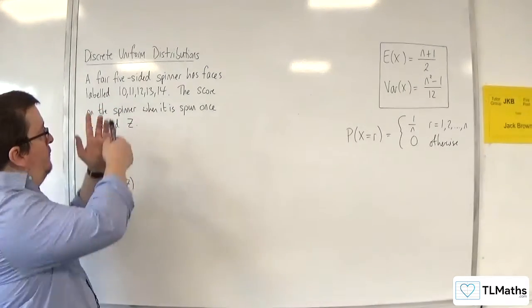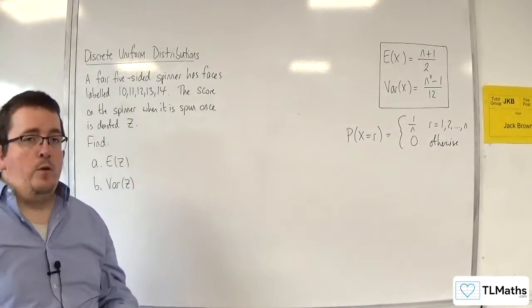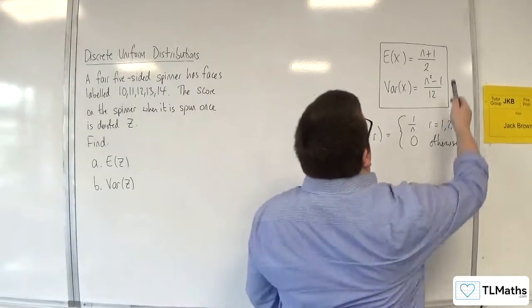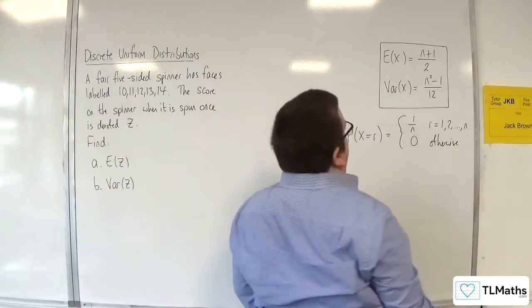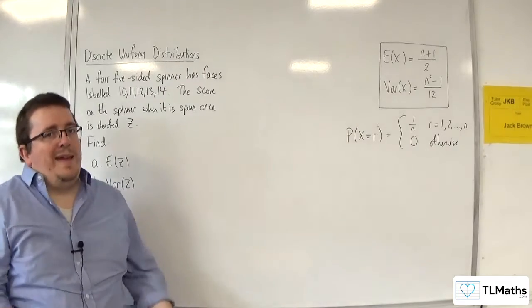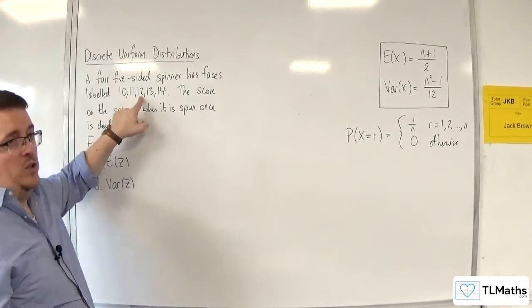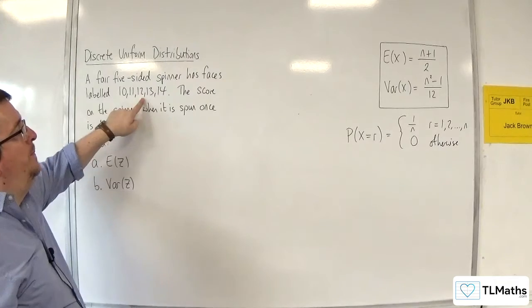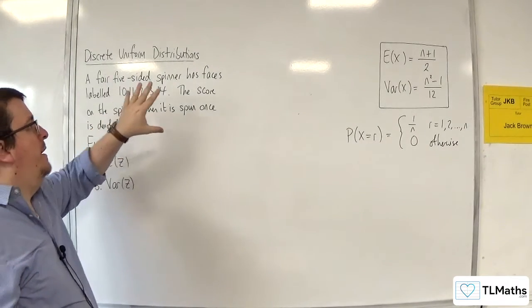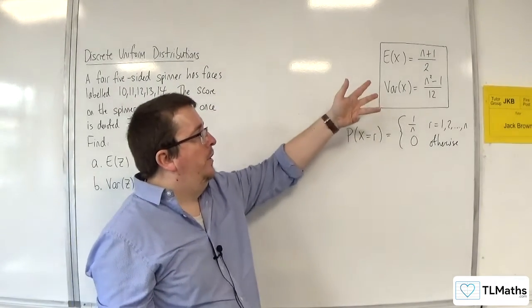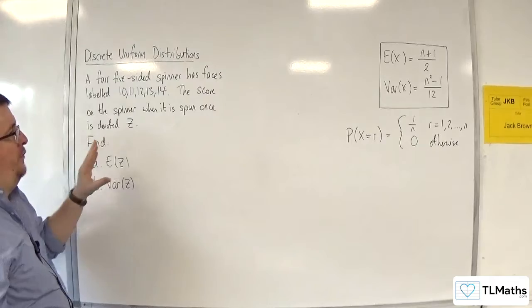Now, you might be thinking, I've got five of them, so I'll just replace n with 5, and I'll get 5 plus 1 over 2, which is 3. But E of z can't be 3. We can clearly see it's going to be 12. So how can I adapt this to now solve this problem here?